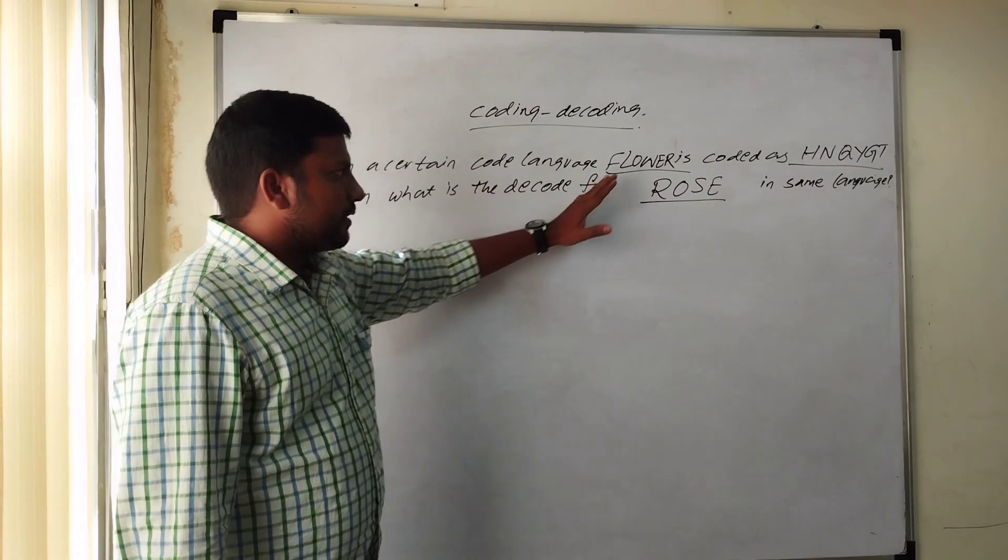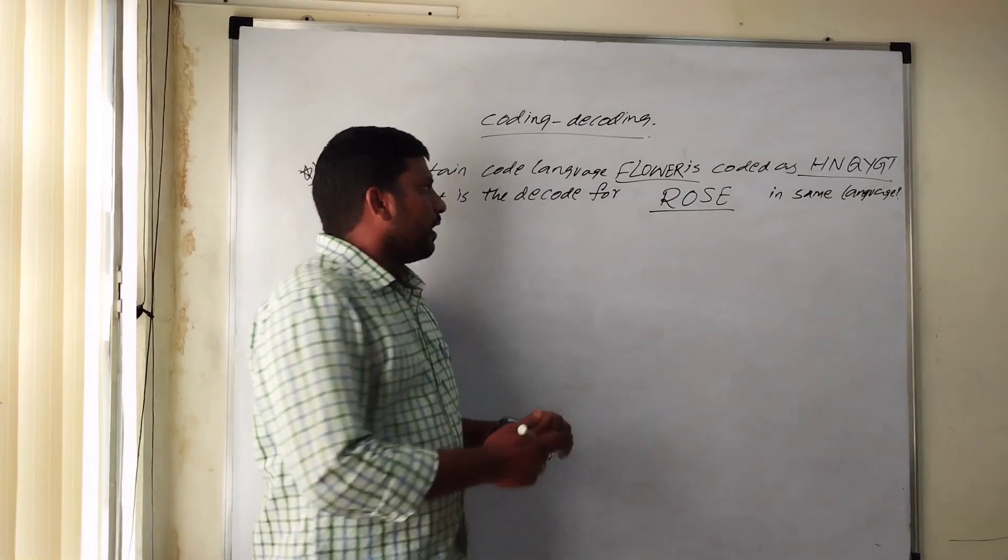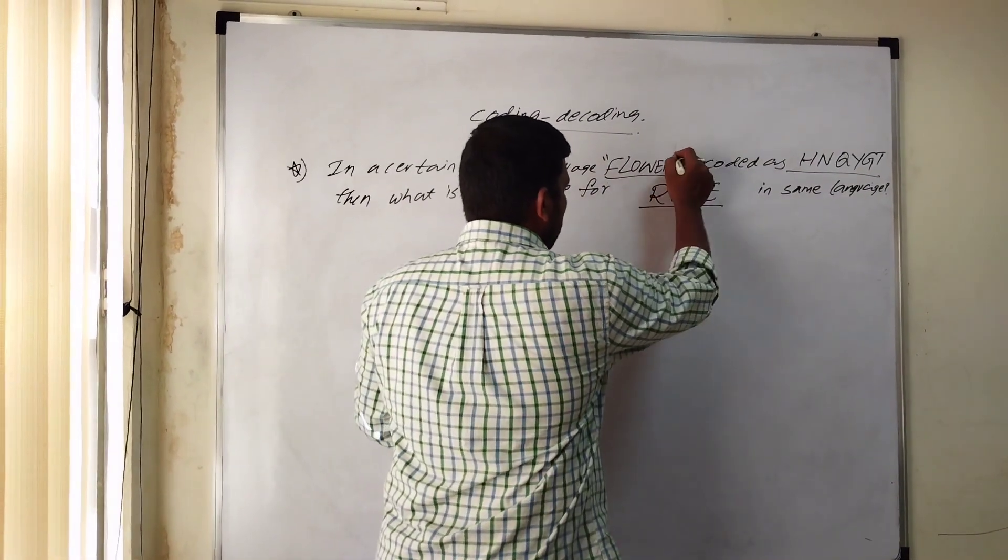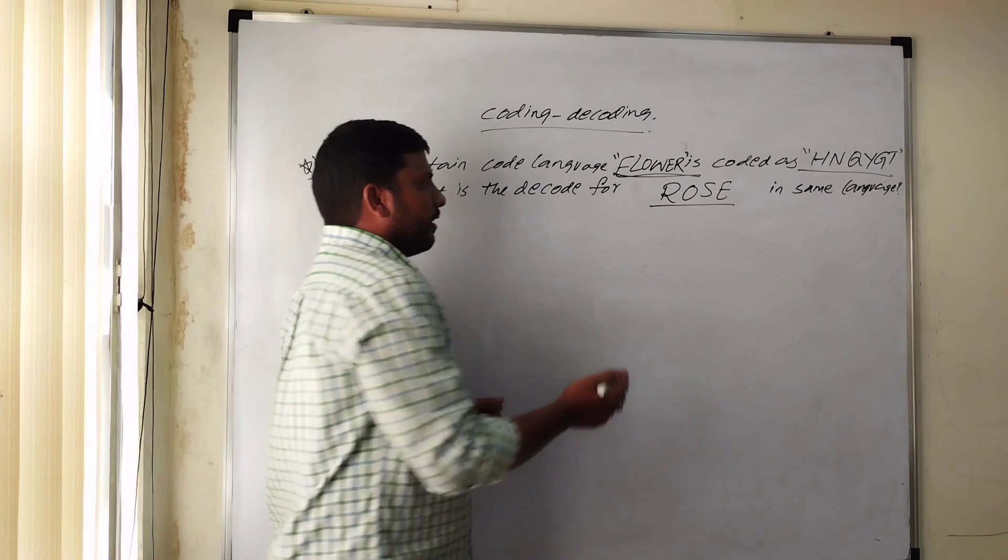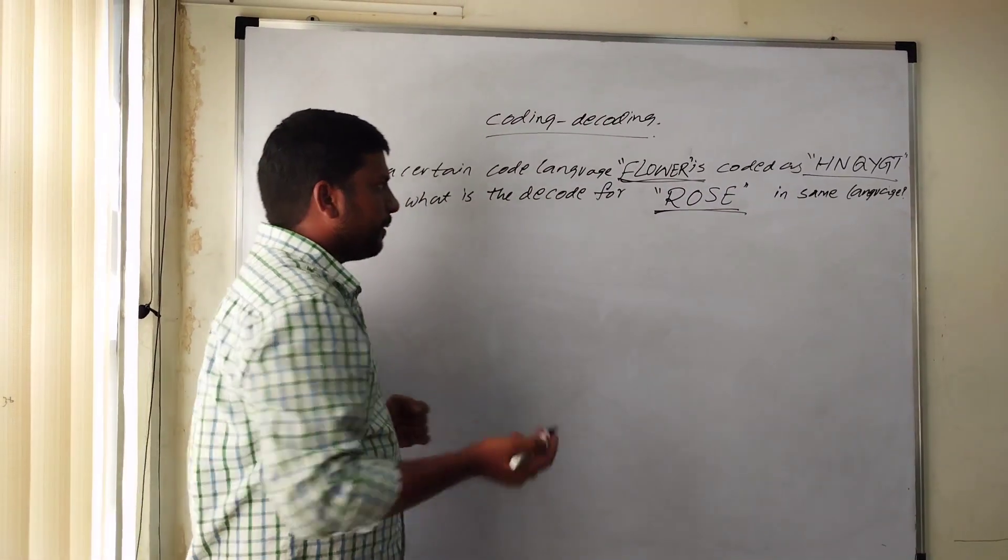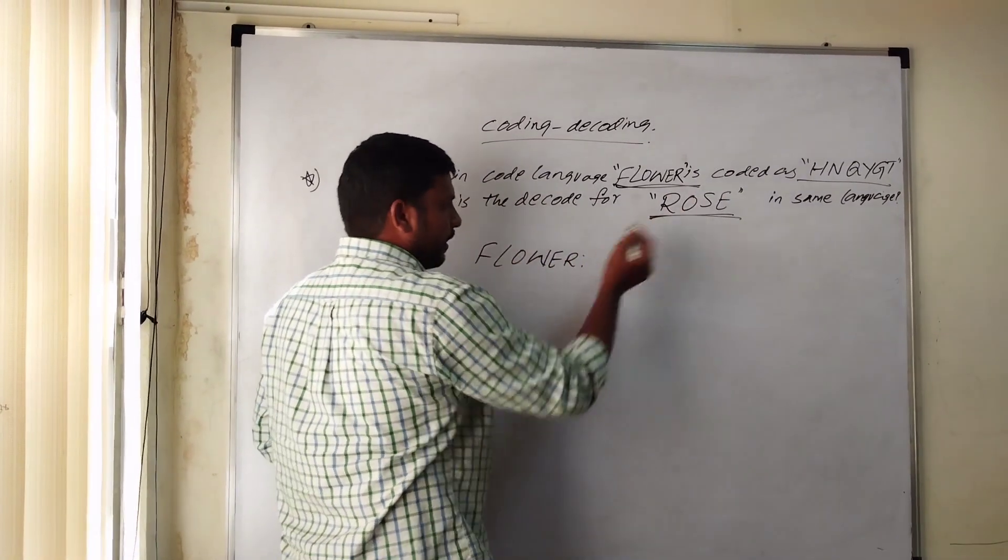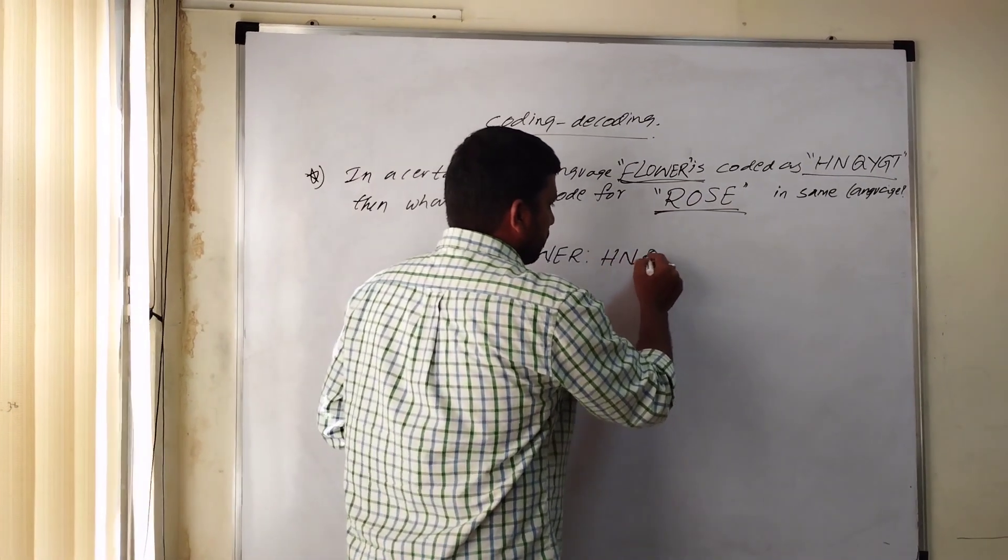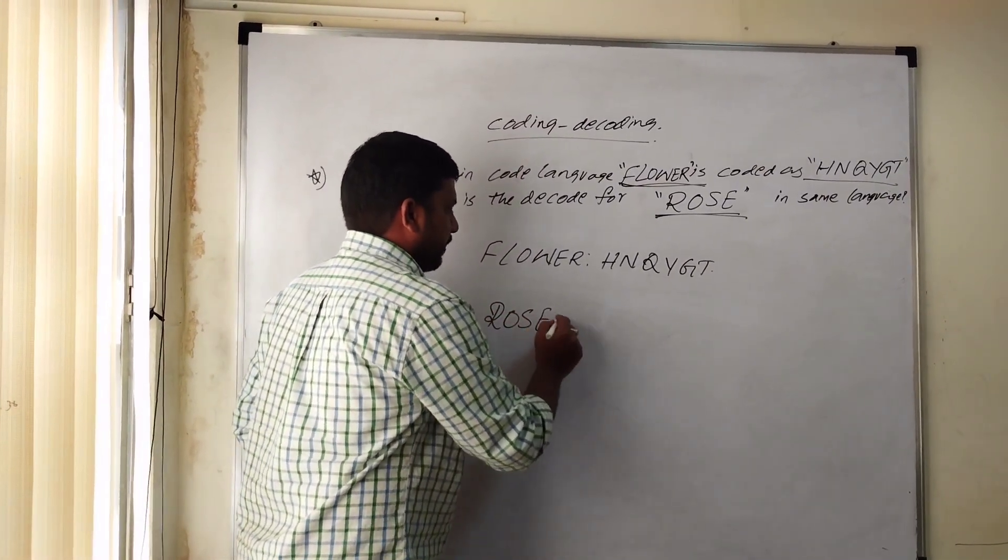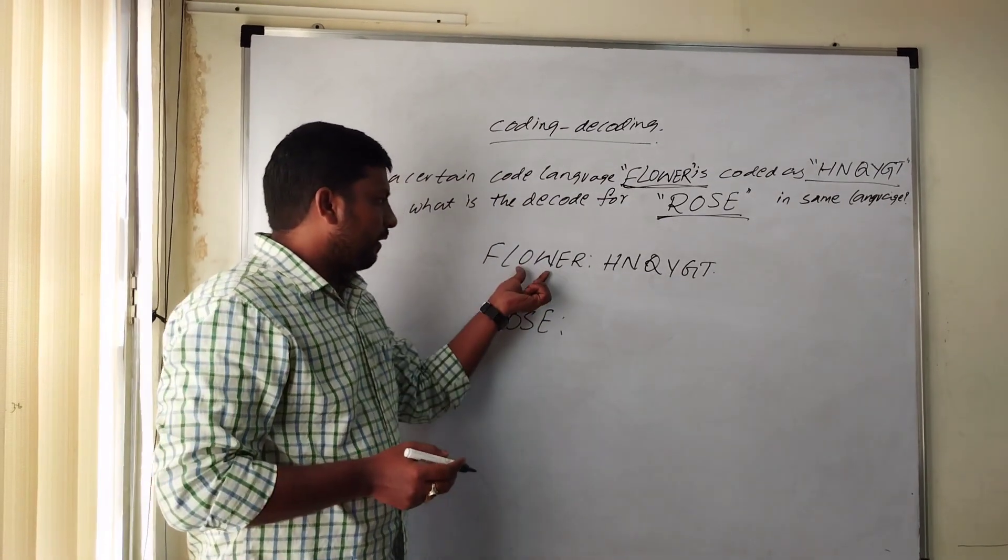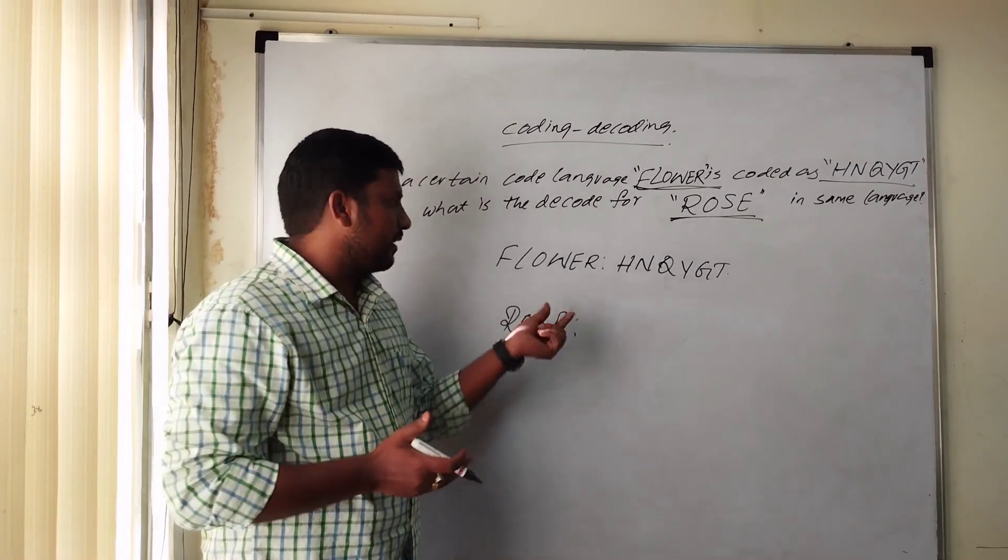This is the second question. In a certain code language Flower is coded as H, N, Q, Y, Z, T. In that same language, what is the decode for Rose? Some code language uses a code language Flower H, N, Q, Y, Z, T.